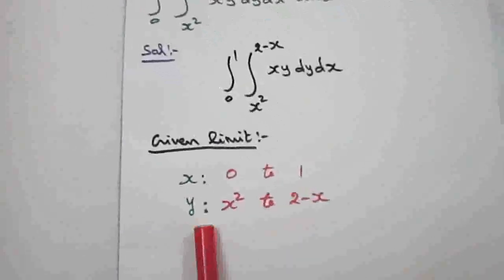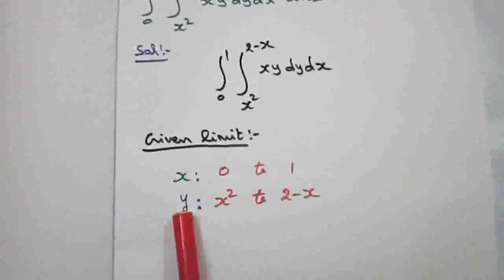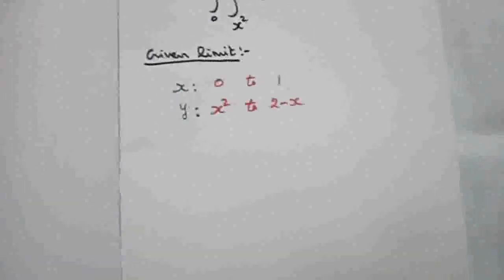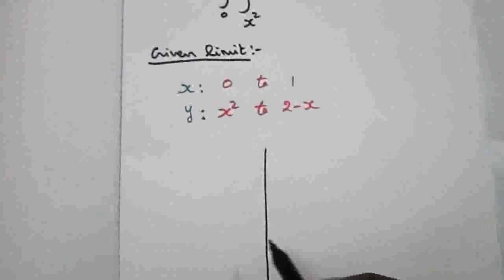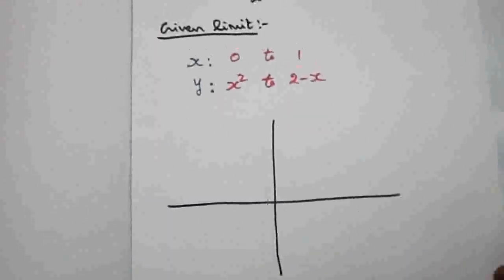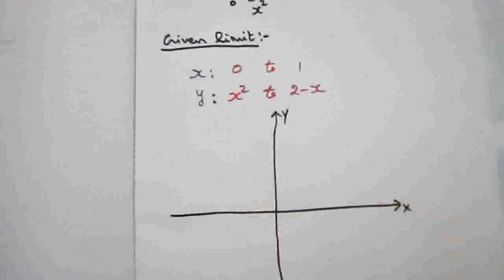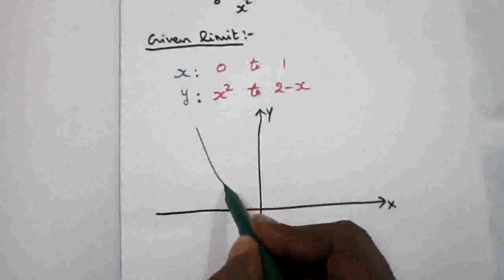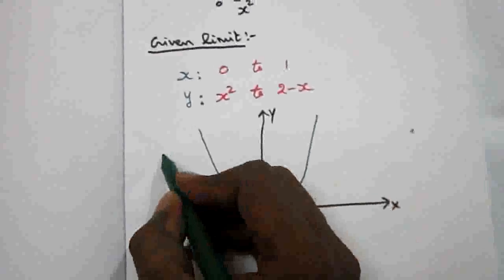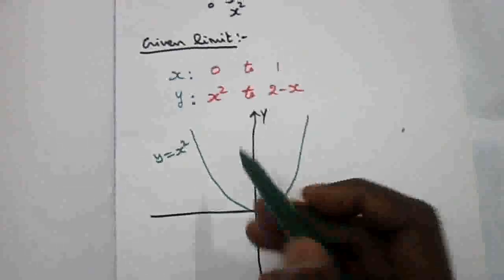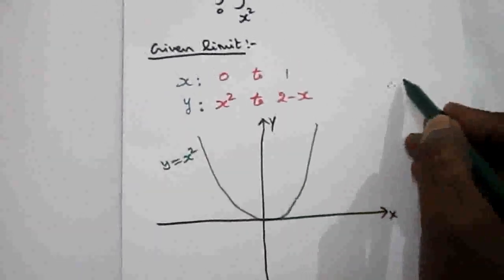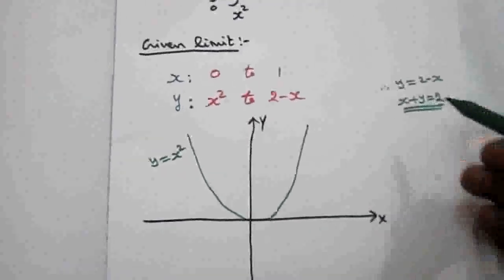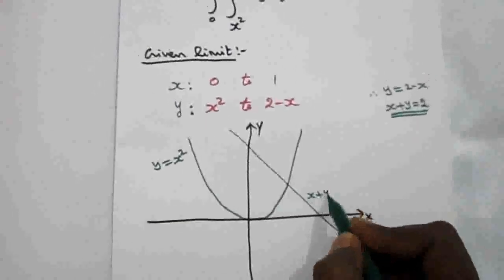The y limit x squared to 2 minus x represents two equations: one is y equal to x squared — a parabola — and another one is y equal to 2 minus x, that means x plus y equal to 2, which is a straight line in intercept form.